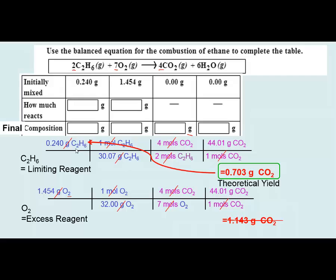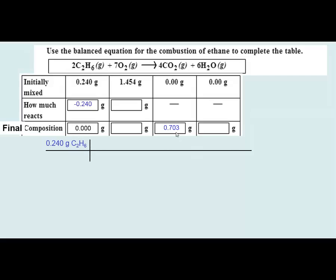Now we have some information. We predict a theoretical yield of 0.703 grams of CO2. We consumed all 0.240 grams of ethane, so I subtract that from the initial amount, leaving 0 grams of the limiting reagent. The 0.703 grams of CO2 goes into the table as our theoretical yield. We're not quite done though — we also want to determine how much water would be produced, so I do another set of limiting reagent calculations.